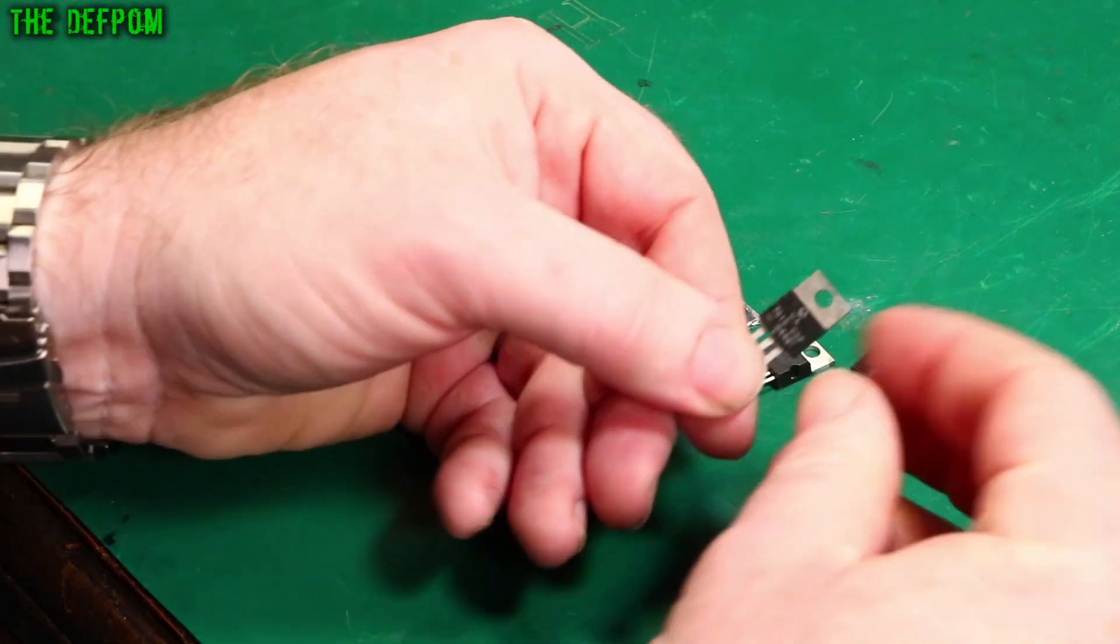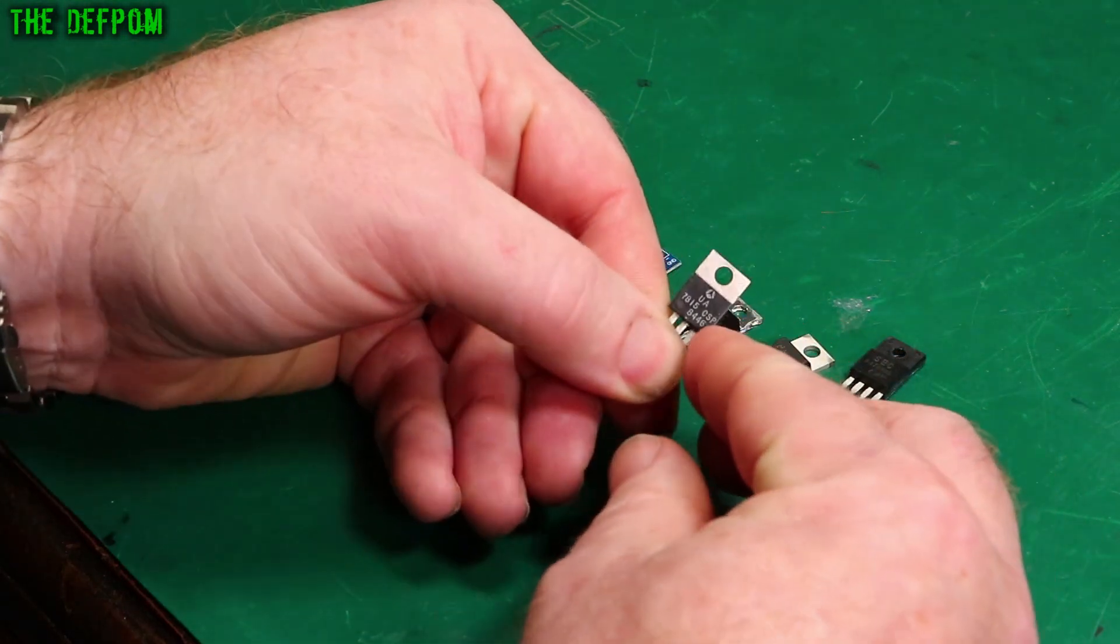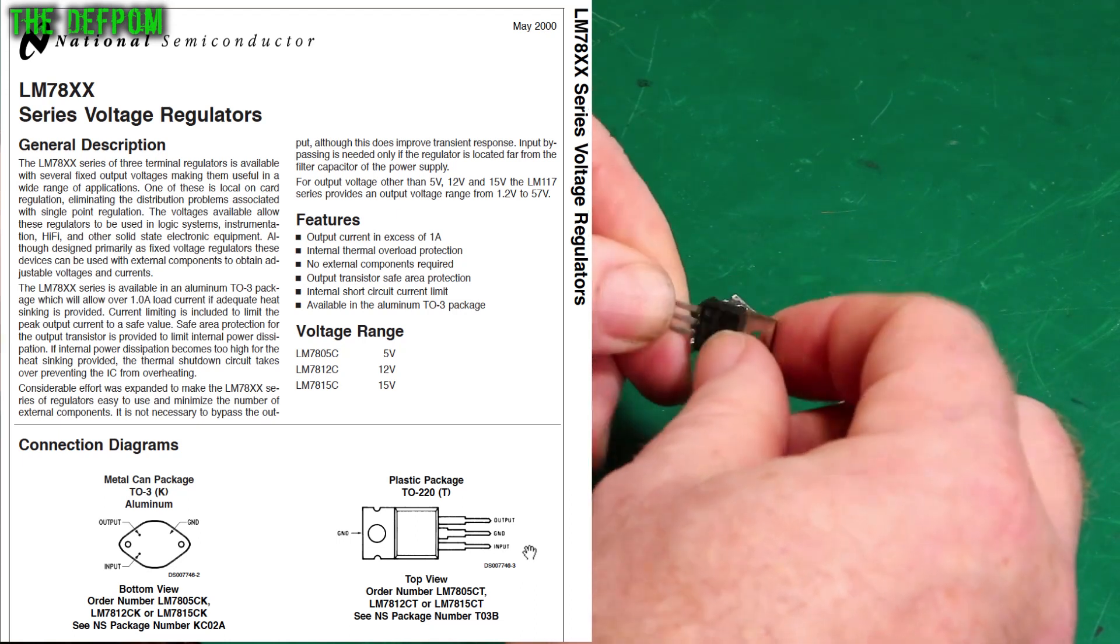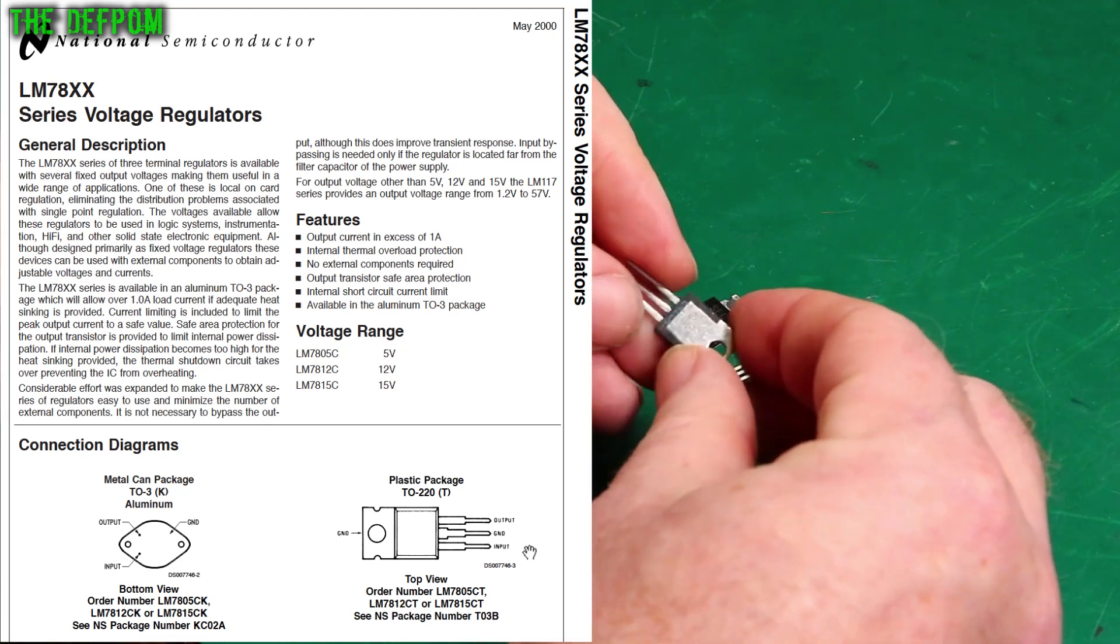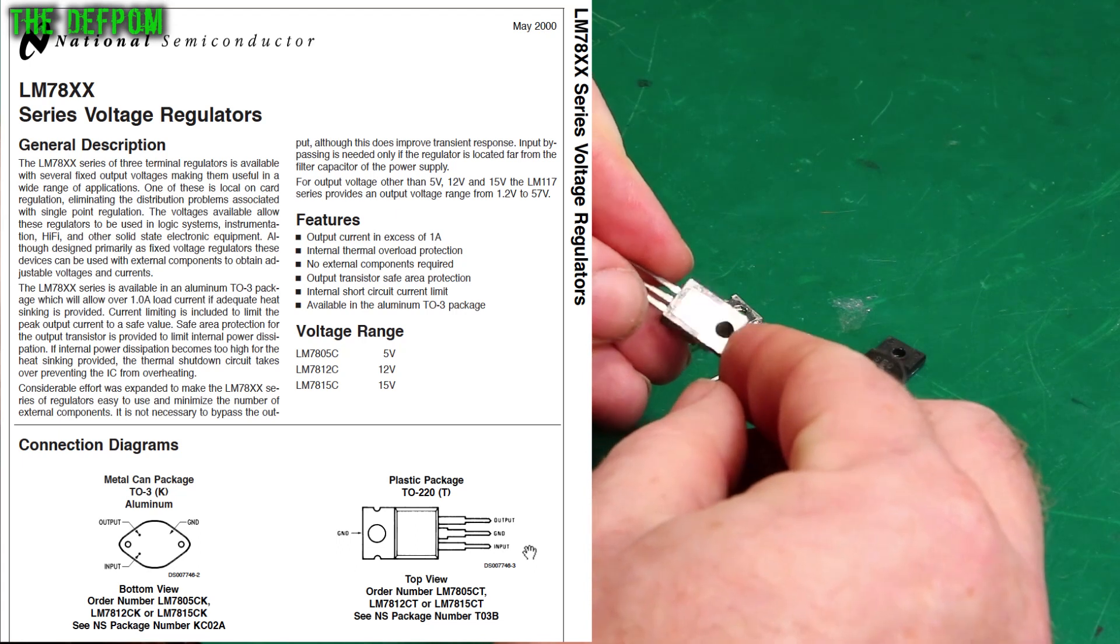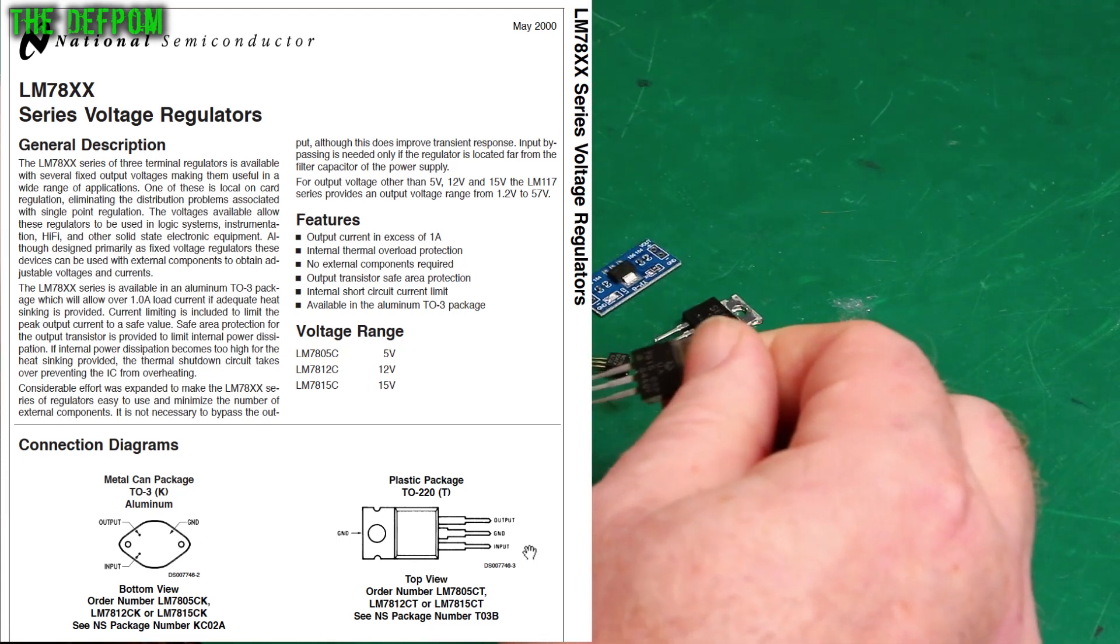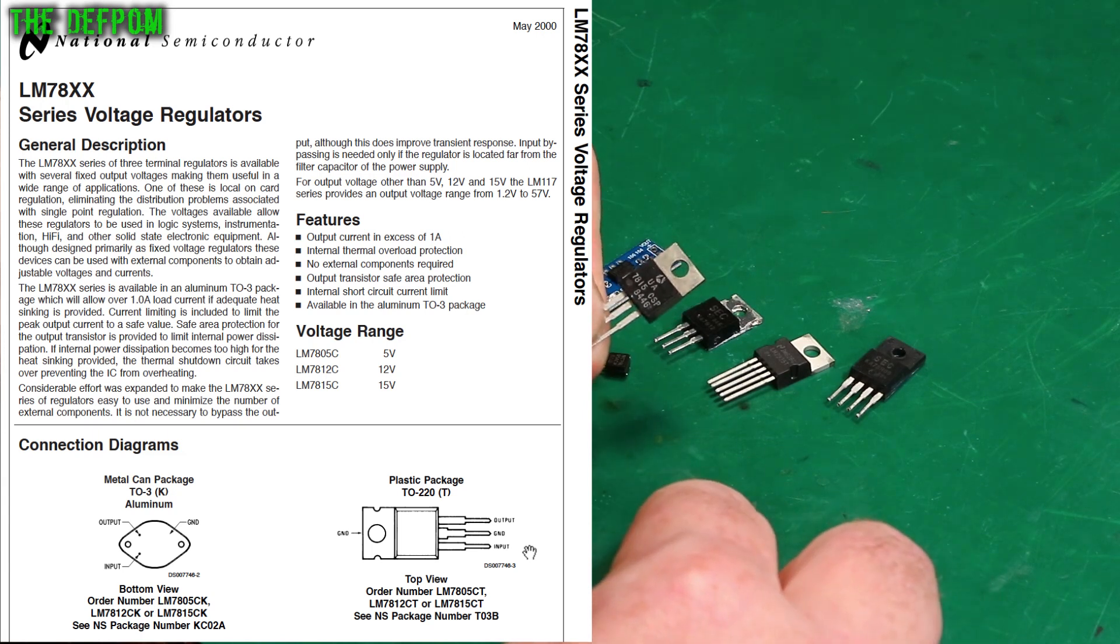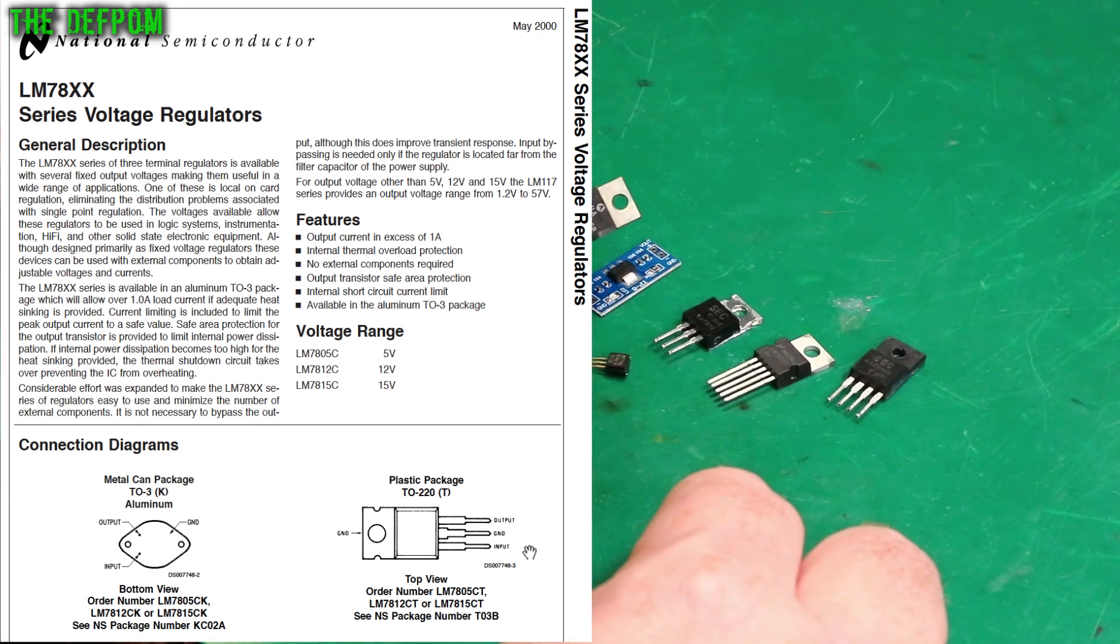So this is a 7815, a positive voltage regulator, 15 volts in this case. The tab is also connected to these pins so this isn't isolated. In this case you have to be careful about making sure this is not connected to anything else. I'll put a pinout over the top here so you can see what the actual connections are for the 78 series devices. It's a really common kind of part, the 78 series.